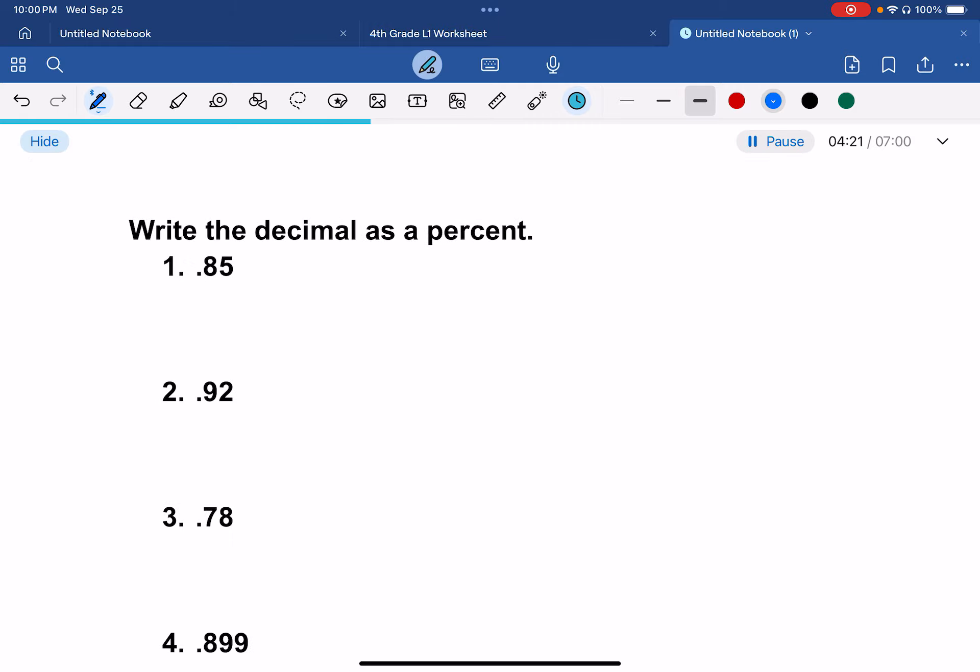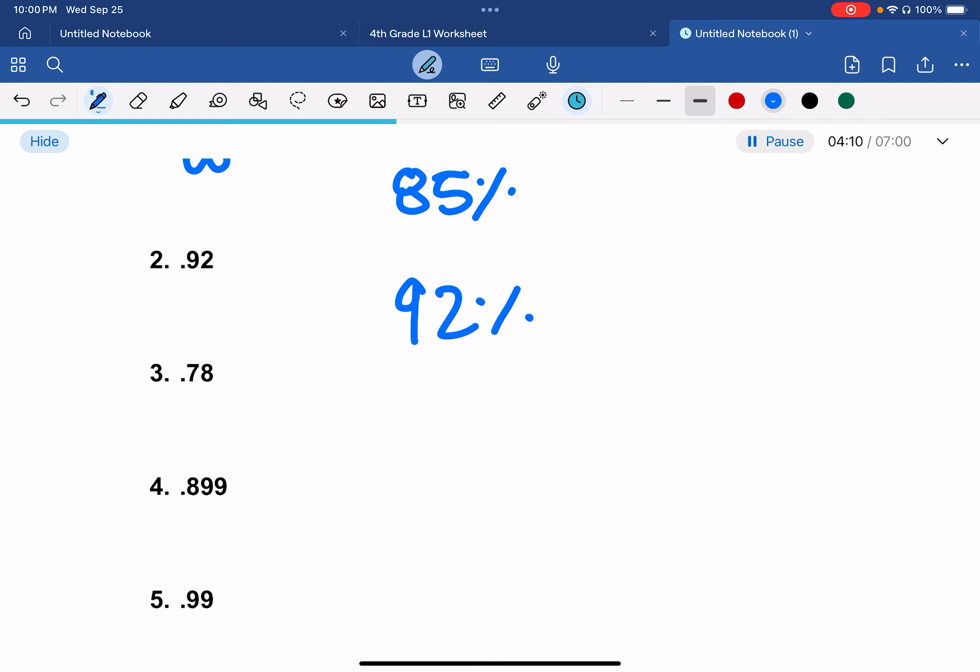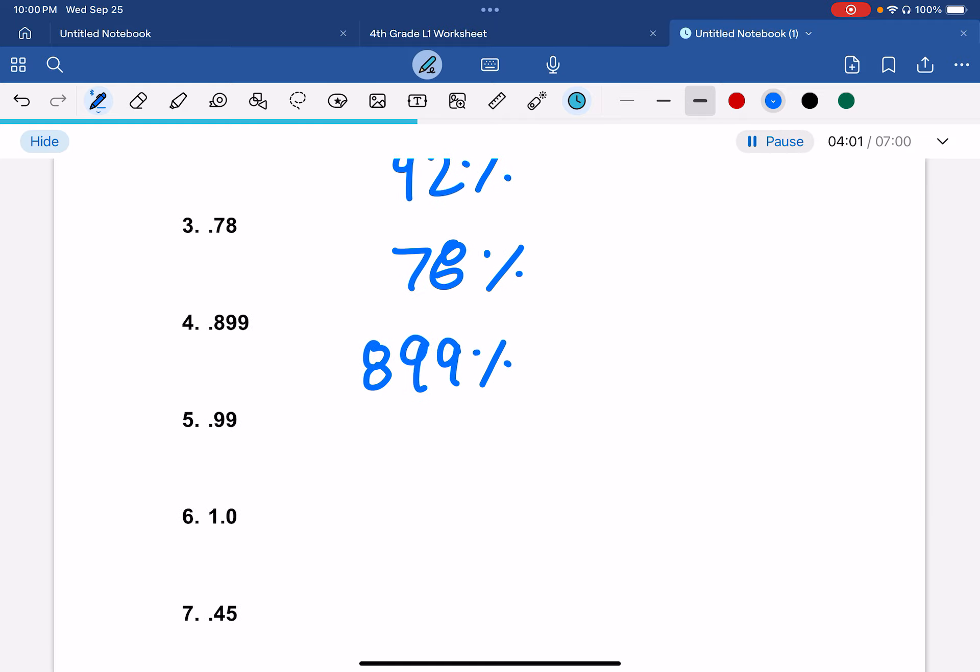Write the decimal as a percent. 0.85 would be 85% because you would move 2 decimals forward. This would be 92%. This would be 78%. This would be 899%.